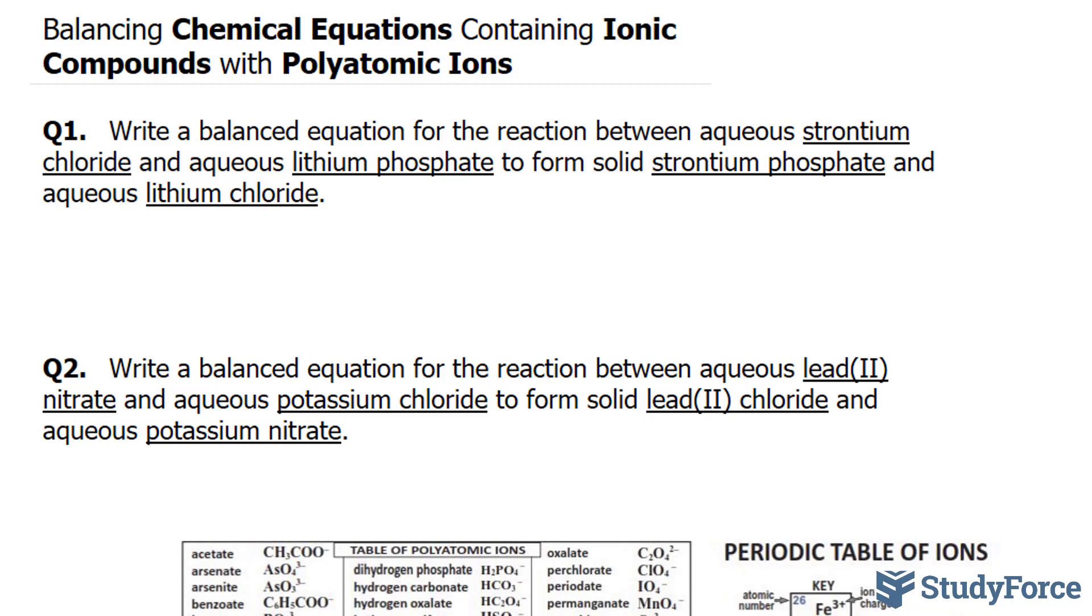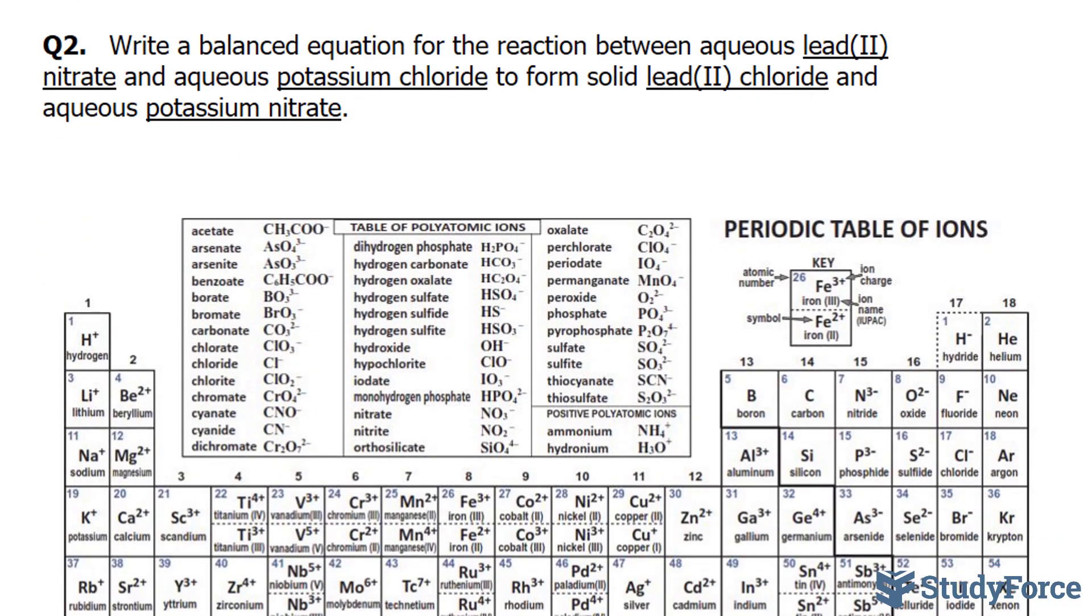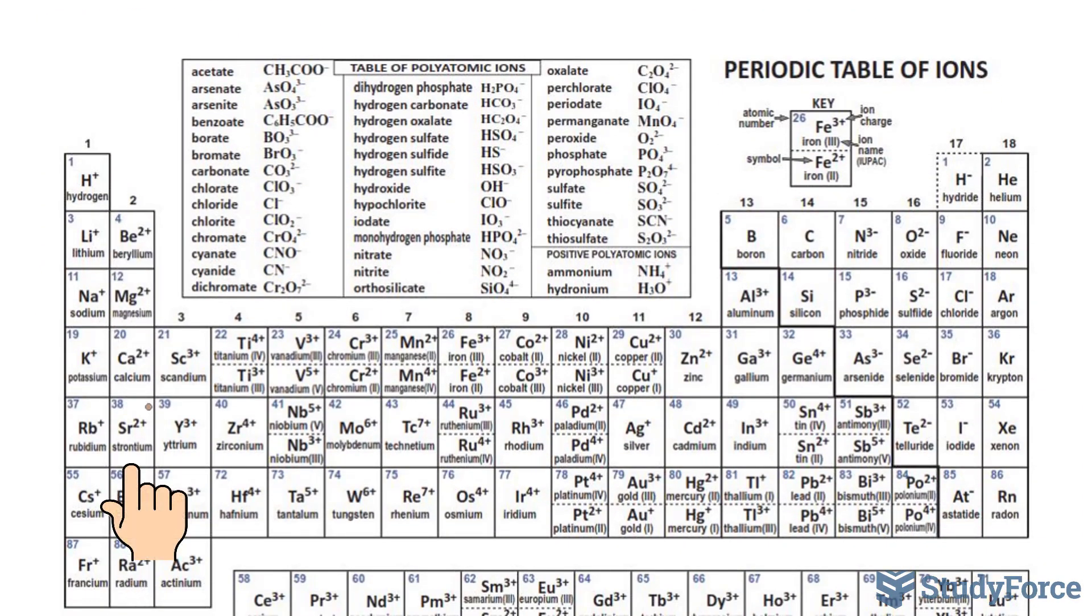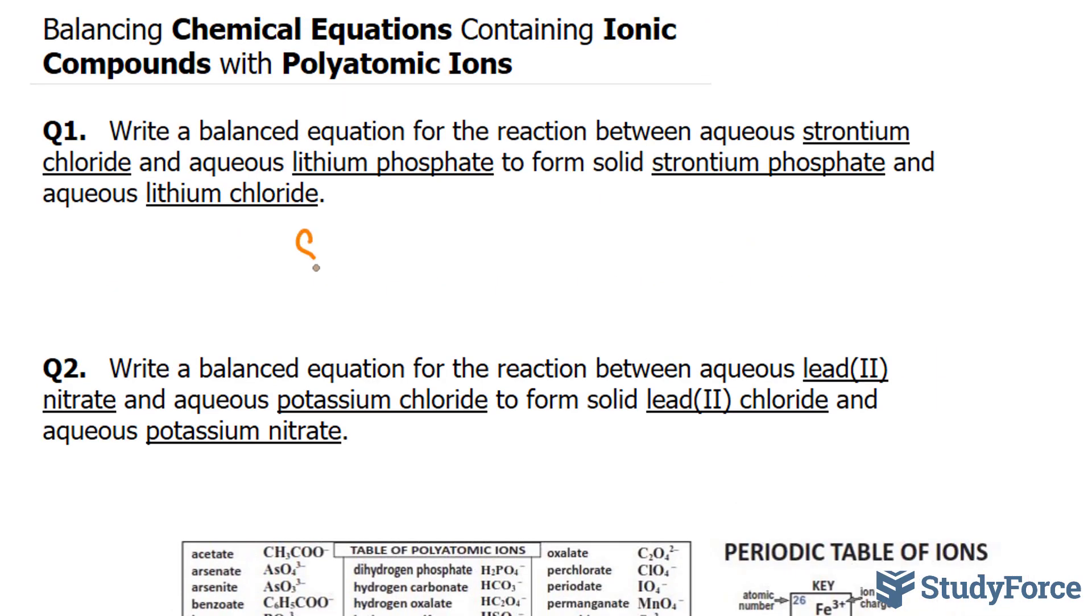Starting with strontium chloride, strontium is a metal found in the second column, so it has a charge of 2 plus and a symbol of Sr. We have Sr with chloride. Chlorine has a symbol of Cl.